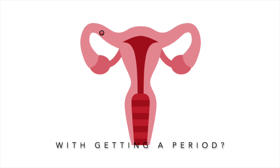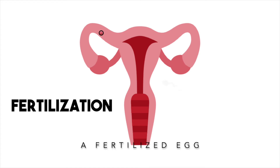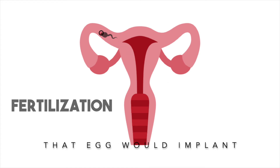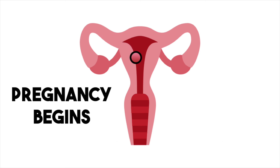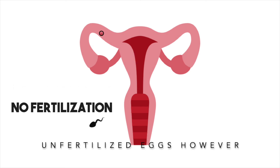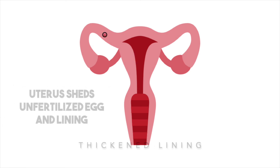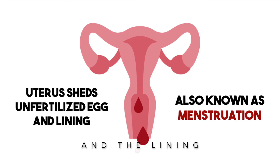What does that have to do with getting a period every month? The uterus builds up a thickened, nutrient-dense lining in anticipation of a fertilized egg. That egg would implant into the uterine lining and begin to grow — this is where pregnancy begins. Unfertilized eggs, however, do not need the thickened lining. The uterus then sheds the unfertilized egg and the lining through menstruation.